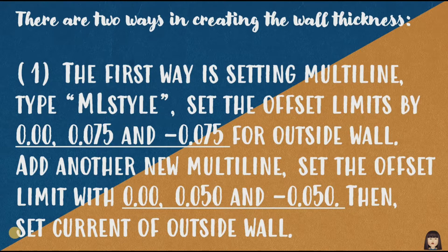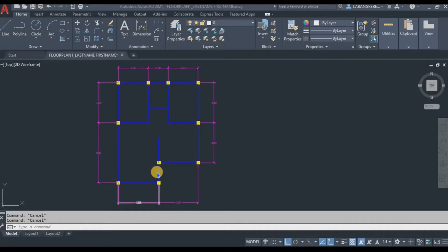The first way is setting the multiline type — ml style. Set the offset limits to 0.75 and negative 0.75 for the outside wall. Where did I get 0.75? I got it by dividing the outside wall thickness of 0.15 by two.